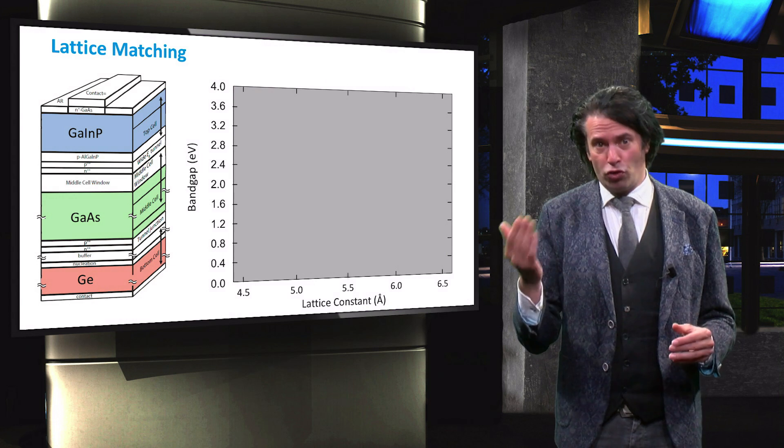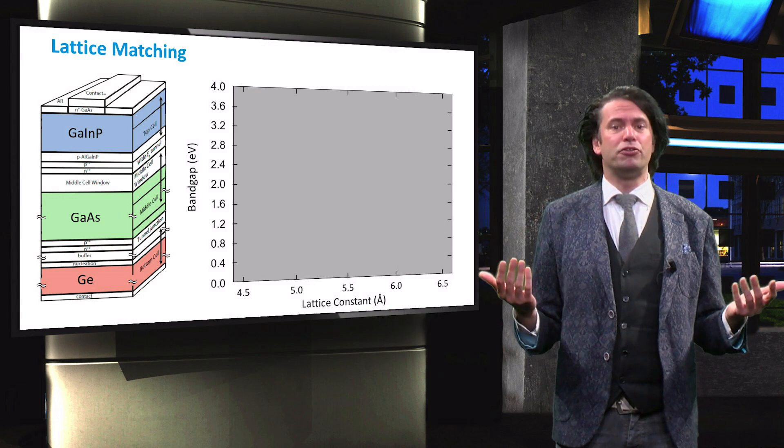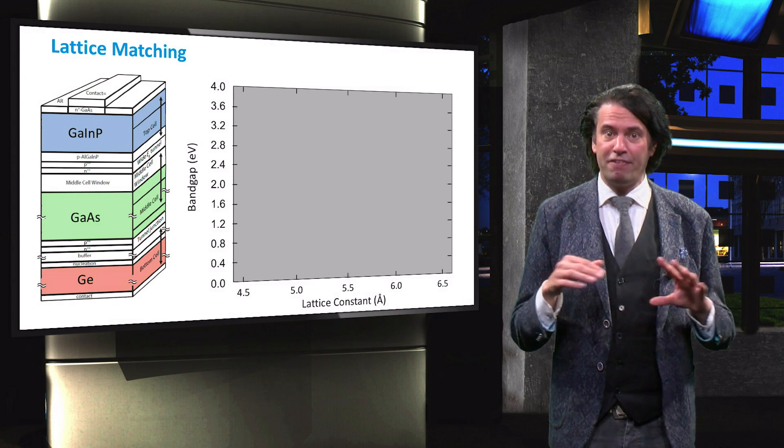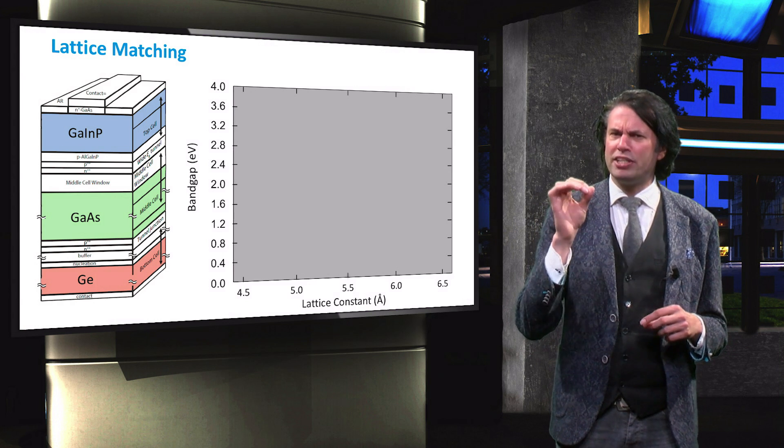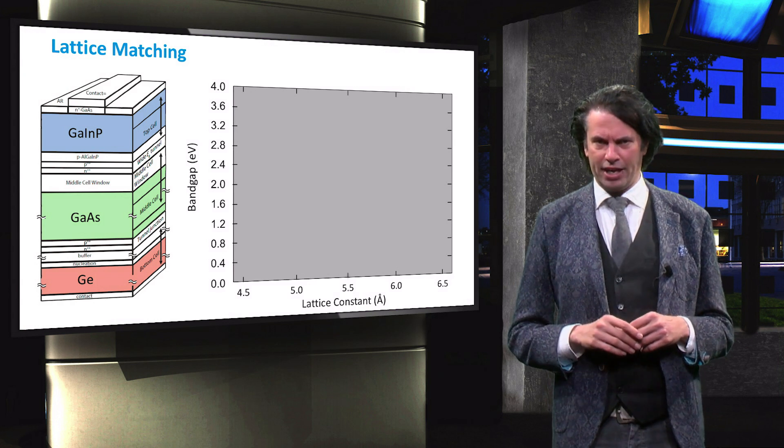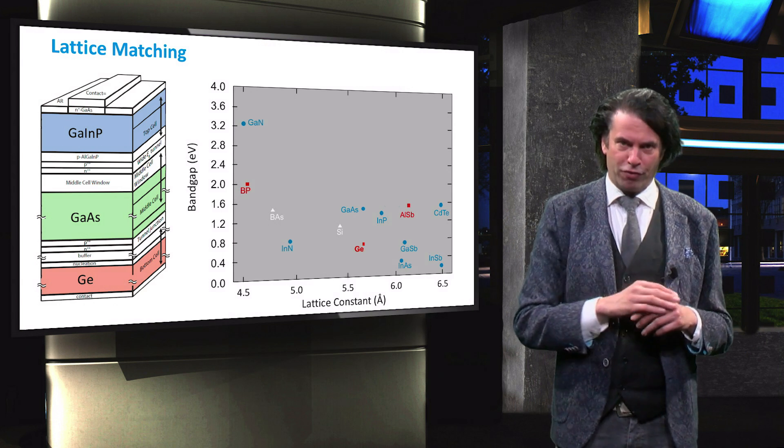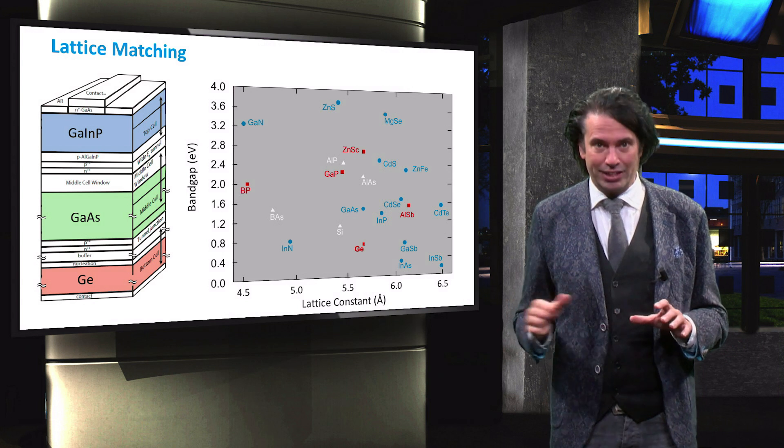This problem can be solved by lattice matching. Lattice matched materials have a similar lattice constant and interface defects are therefore virtually absent. To understand what this means we will take a look at this phase diagram. In the phase diagram the bandgap of a number of relevant materials is plotted against their respective lattice constant.